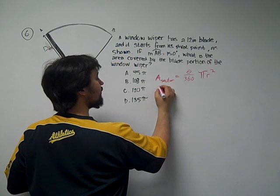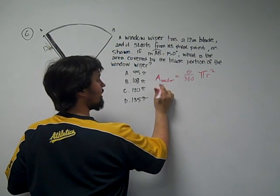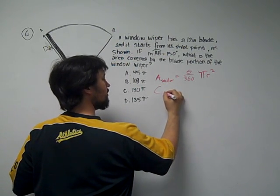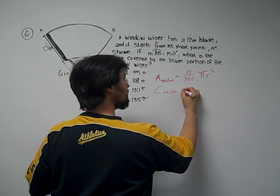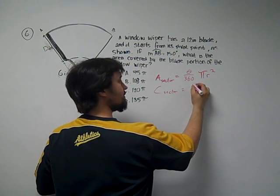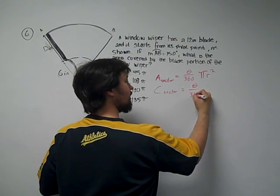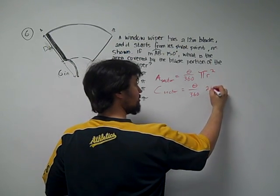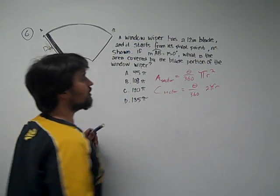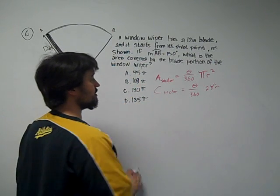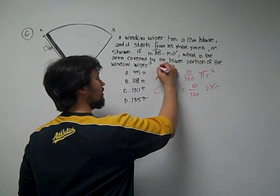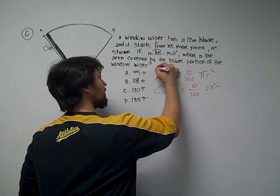Same thing with our circumference idea. If we want the circumference of a sector, or the arc length as it's normally called, the full circumference would be 2 pi r. So we should know both of these equations. Both of these are flashcard concepts.